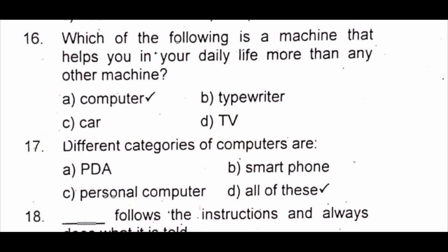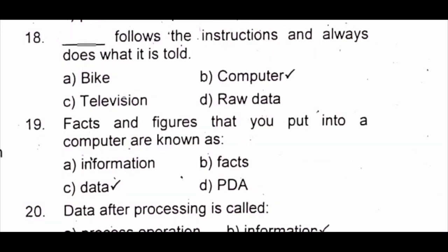Question 17: Different categories of computers are A) PDA B) smartphone C) personal computer D) all of these. The answer is D) all of these. Question 18: Dash follows decisions and always does what it is told. A) bike B) computer C) television D) raw data. The answer is B) computer.